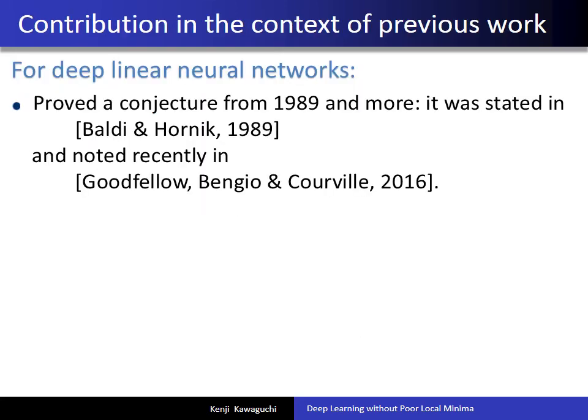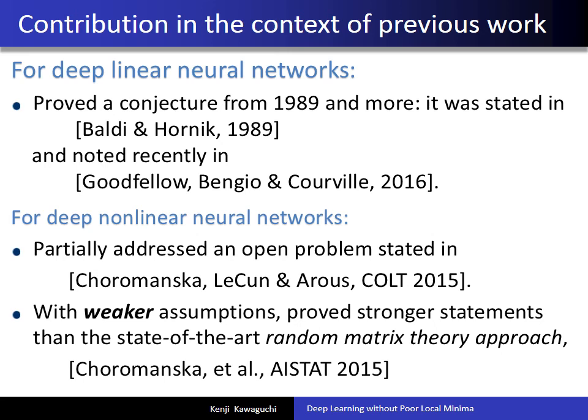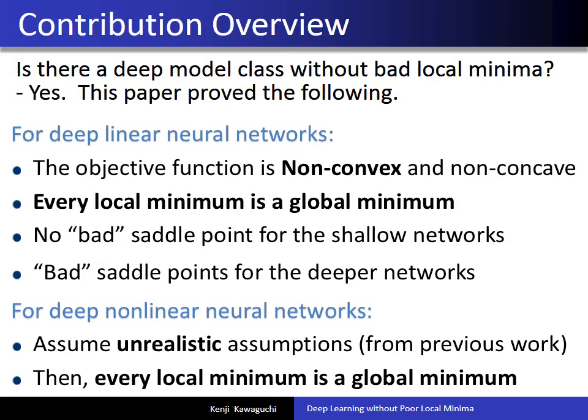The contribution of this paper can also be seen in the context of previous work. For deep linear networks, this paper proved a conjecture from 1989 and more — the conjecture was stated in a previous paper and noted in a recent deep learning book in preparation. For deep non-linear networks, this paper partially addressed an open problem stated in last year's COLT. This paper also improved state-of-the-art positive results about Relu nets due to a random matrix theory approach in a previous paper. In the oral presentation at NIPS 2016, the author will explain those statements in more detail.